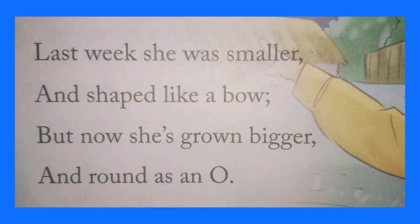Next stanza: Last week she was smaller and shaped like a bow, but now she is grown bigger and round as an O. In this stanza, the child says that in the previous week the moon looked like a bow when it was smaller, but now it looks round as an O when it becomes bigger.